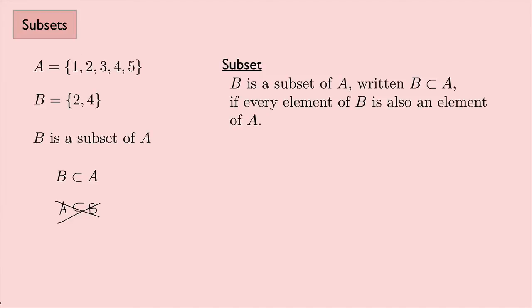In general, B is a subset of A, written as B with the sideways U of A, if every element of B is also an element of A.